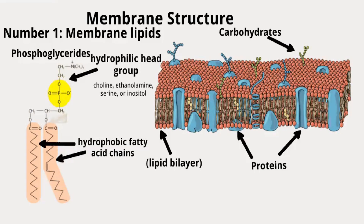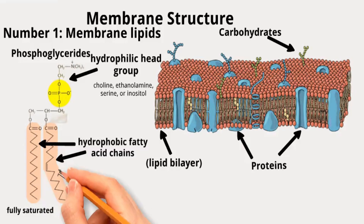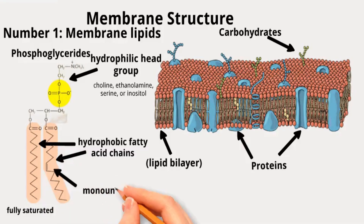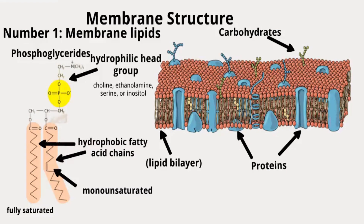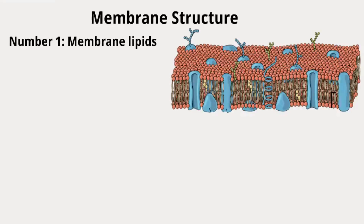The fatty acid chains of phosphoglycerides can be fully saturated, monounsaturated (one double bond), or polyunsaturated (multiple double bonds). Phosphoglycerides exhibit an amphipathic character, meaning they have both hydrophilic and hydrophobic regions, which is vital for their role in forming the lipid bilayer of cell membranes.